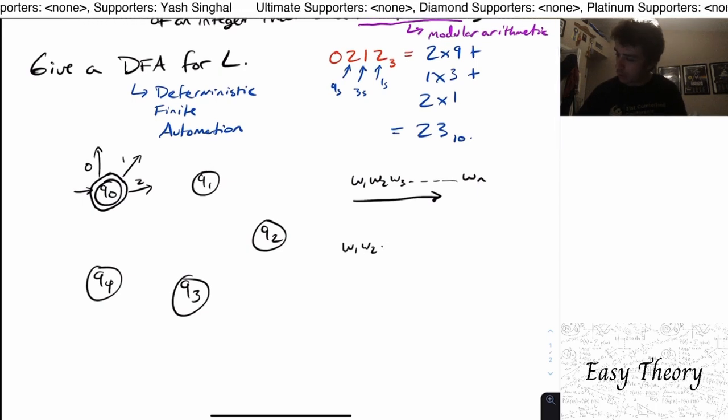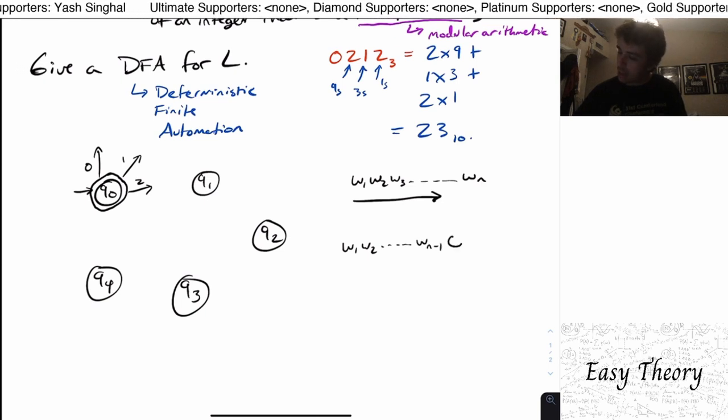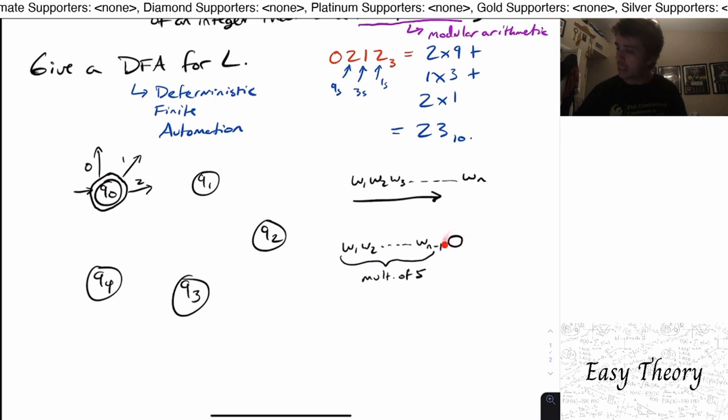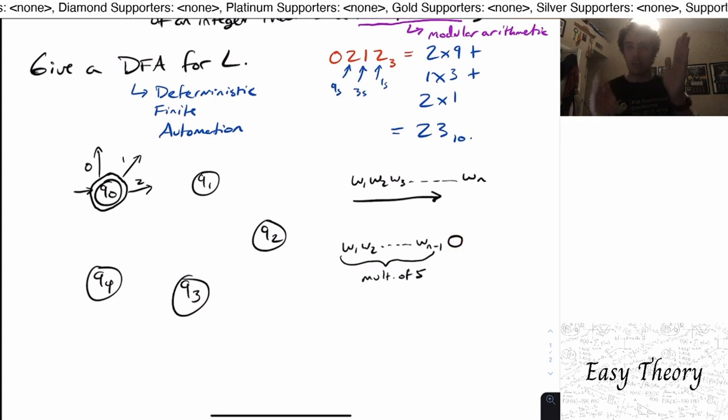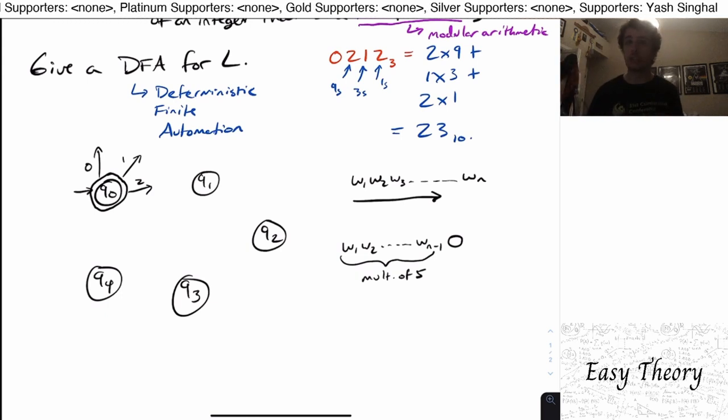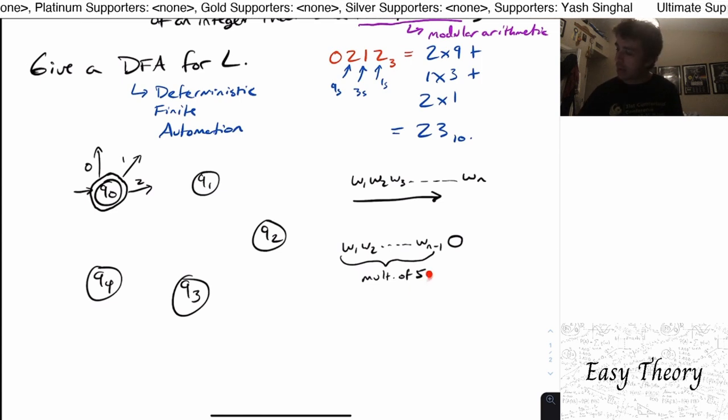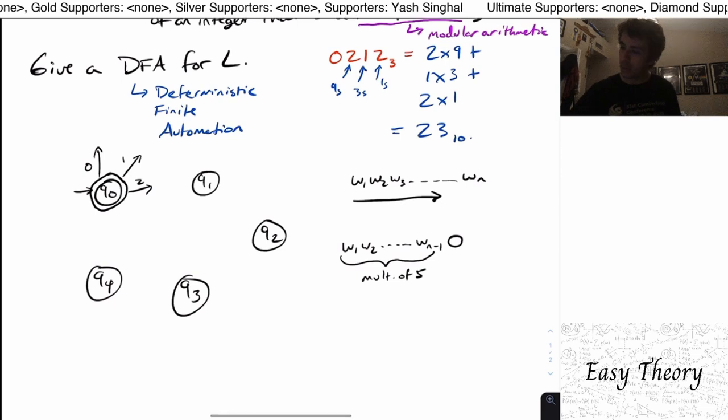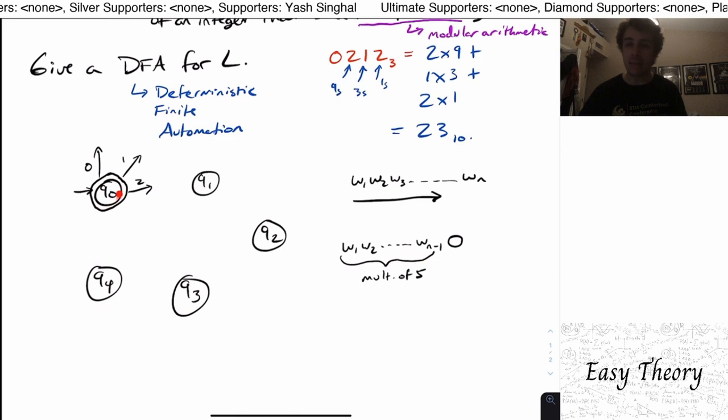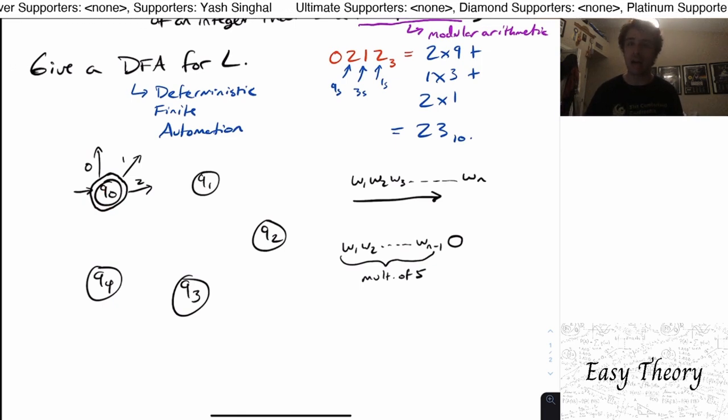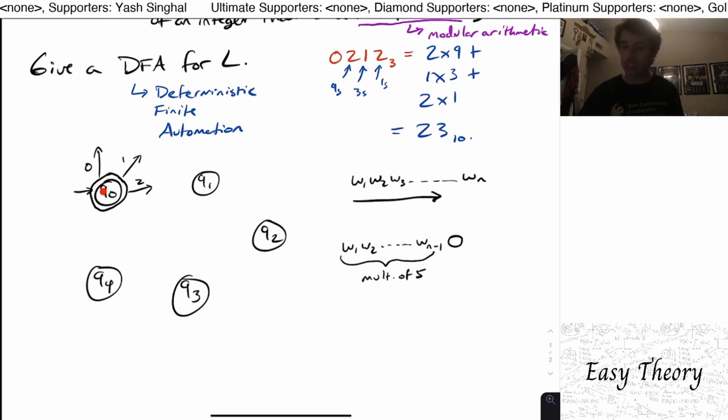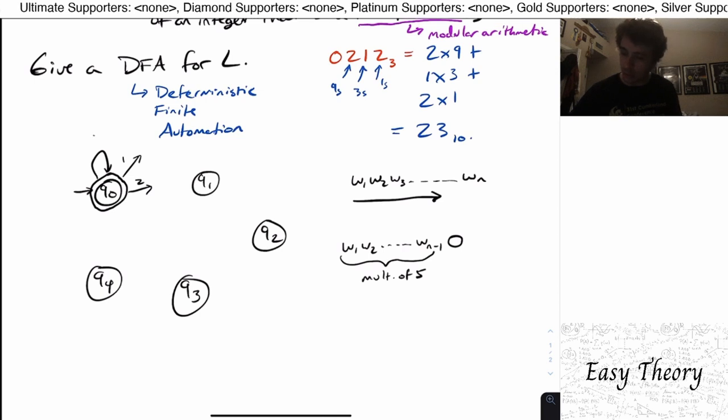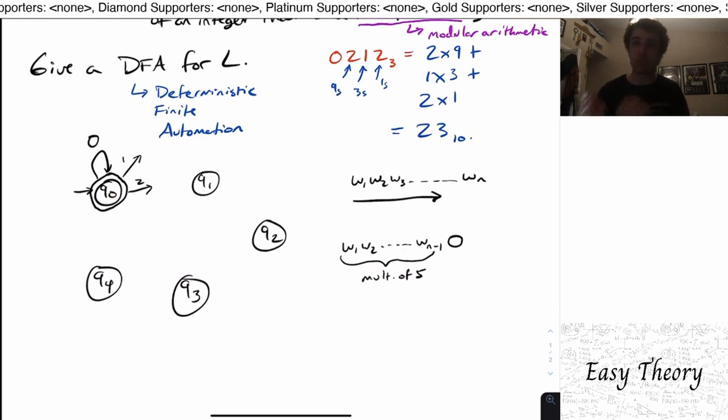So let's think about this. Suppose that we have a string so far up to wn minus 1, and then we see a 0, where the first part right here is a multiple of 5, and then we see a 0 here. Well, since we're in base 3, shifting over the number by one position to the left just means multiplying the number by 3. So if we had a multiple of 5 before and we multiplied by 3 onto that, it's still a multiple of 5. So in the case of q0, well if we're in q0 that means that we have currently seen a number that's a multiple of 5. And if we have seen another 0, then we must still be in the state that's a multiple of 5, which is q0 here. So I'm going to redirect the 0 transition to be in q0, because we will still have a number that's a multiple of 5.